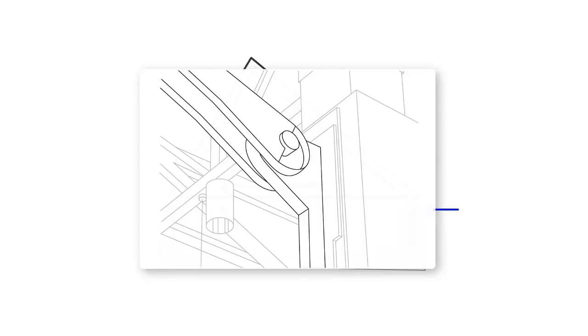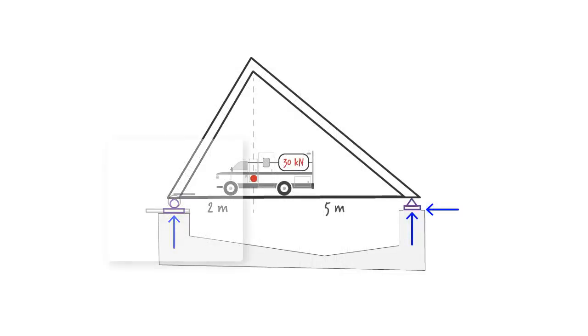A roller support is a bit different than a pin support. Like the pin, the roller resists a vertical force. But it cannot resist a horizontal force. When such a force is present, the roller moves in the direction of the force without resisting it. It cannot resist a bending moment either. So the only reaction force that develops at a roller is a force perpendicular to its surface of contact.